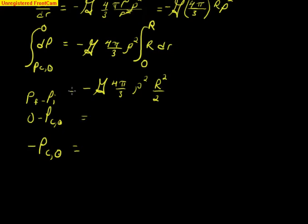That's going to be equal to, that's going to equal, negative, g, or 4 over 6, we'll call that 2 thirds pi, times our density, squared, times r squared.